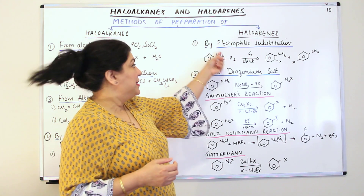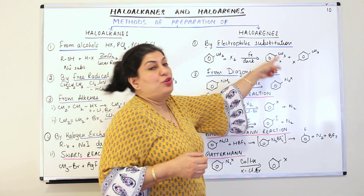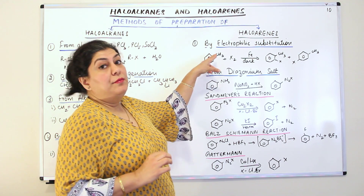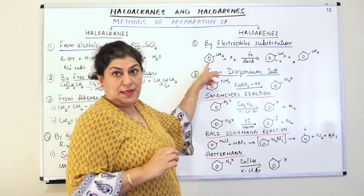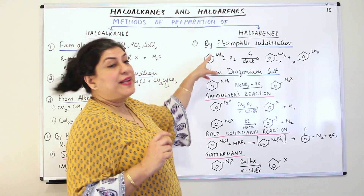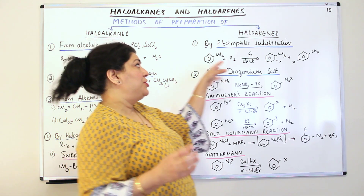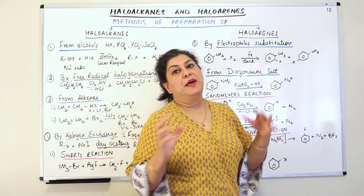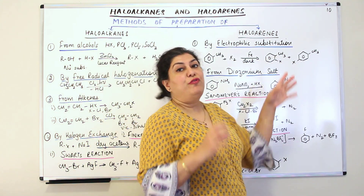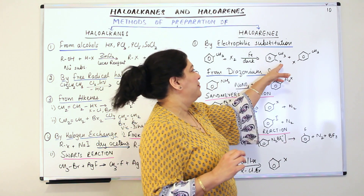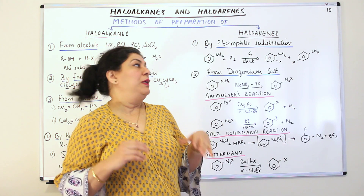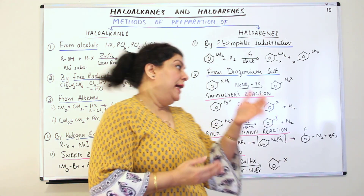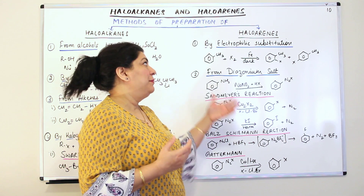For example, benzene reacts with the halogen and results in the formation of the halogen derivative in the presence of iron and in darkness. If you have toluene instead and the halogen is being added to it, you will get a mixture of two derivatives — the ortho and para isomers will be obtained. So you get haloarenes by electrophilic substitution.